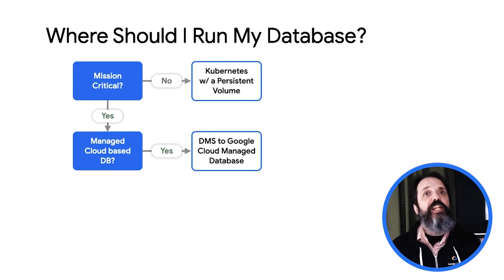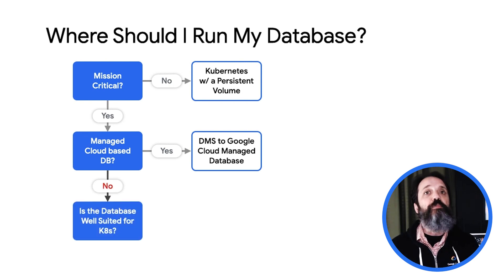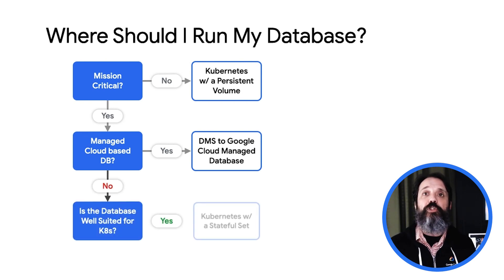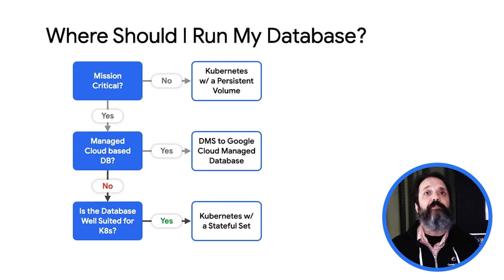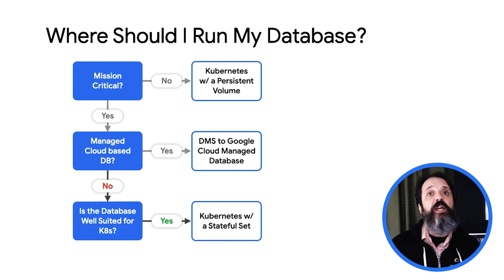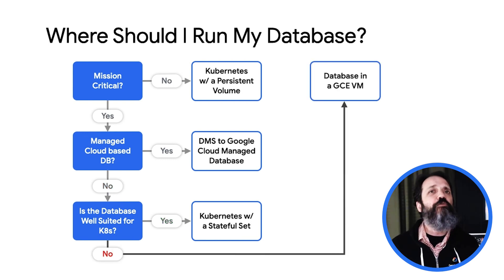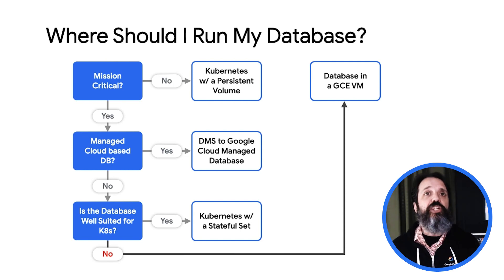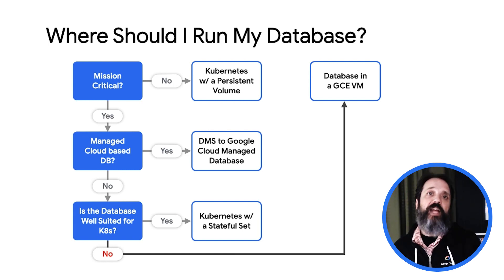Now, if Cloud SQL is not a fit, then your next option could be to run your database natively on Kubernetes. You would build a cluster and install and configure the database software using Kubernetes stateful set and persistent volumes, then use Migrate for Anthos to export the data from the VM to the new database. Finally, if running the database on Kubernetes is not a good fit, you could migrate the database tier into a Google Cloud Compute Engine VM using Migrate for Compute Engine. There's a great blog post on our site providing additional details on how to decide where to run your database — we'll put the link in the description below.